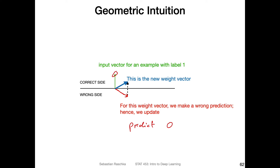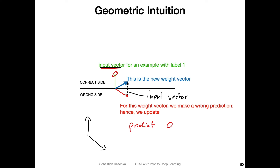How do we correct this? By moving the weight vector closer to the training example so that the angle becomes smaller than 90 degrees. In the perceptron algorithm, we do this by adding the input vector to the weight vector. Taking the input vector (shown as a dashed line) and adding it to the current wrong weight vector gives us a new weight vector that now has a smaller-than-90-degree angle with the input — thereby correcting the decision boundary.